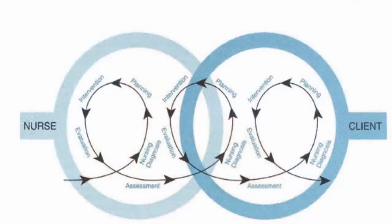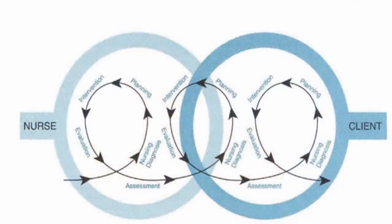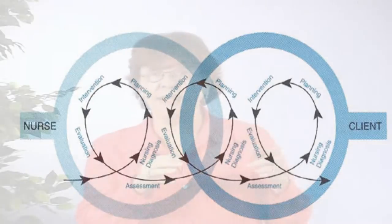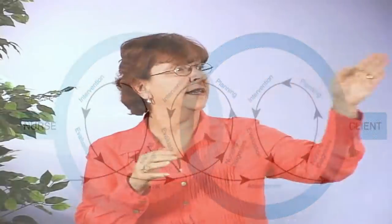Remember, we said at the very beginning that the nursing process was systematic and cyclic. A problem leads to a goal, a goal leads to interventions, interventions lead to implementation, implementation leads to evaluation. Evaluation eliminates the implementation, implementations eliminate interventions, interventions eliminate the goal. The goal met eliminates the problem.